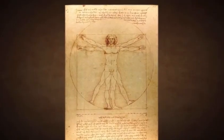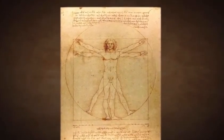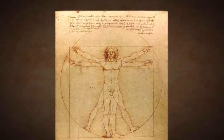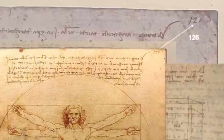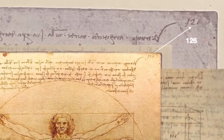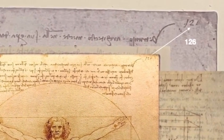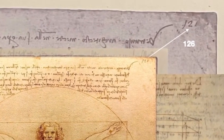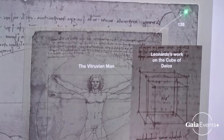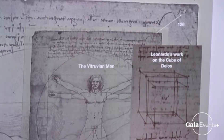But da Vinci purposely put the number 126 on here. The 126 is also conspicuously pointed out by this letter B — backwards — as if to point right to it. There's even a fold on the page; it's not a book page. And you've got a 6 right here. At the same time, da Vinci was also writing in Codex Atlanticus about this Cube of Delos problem.